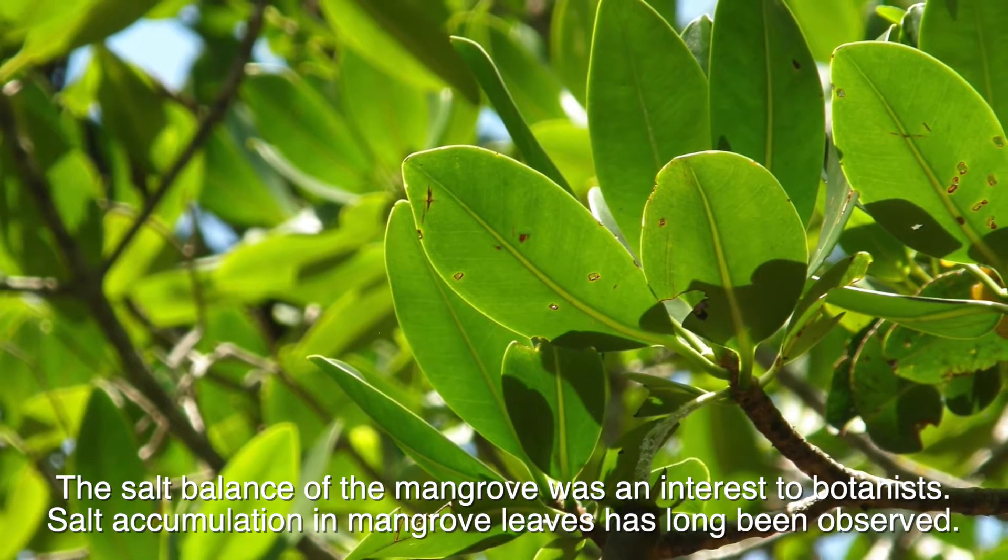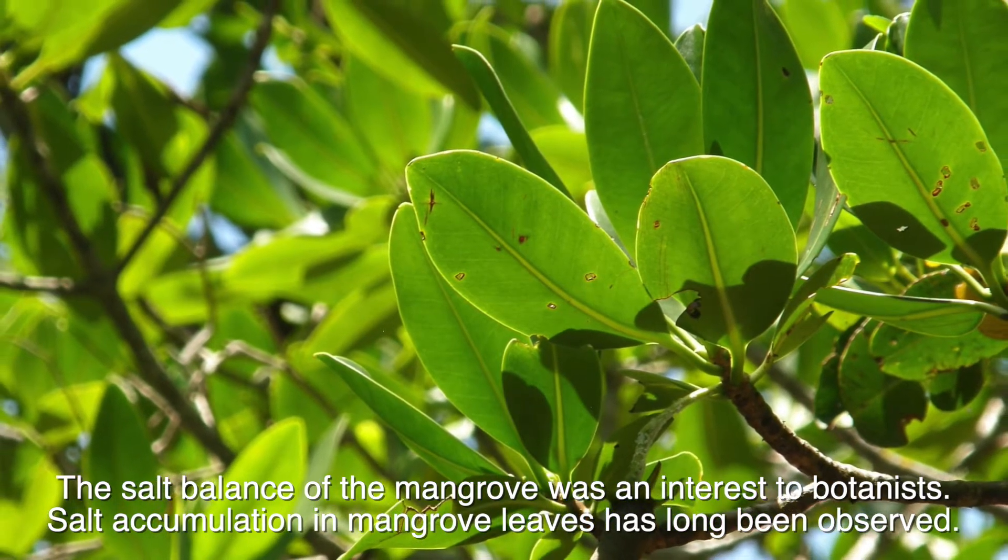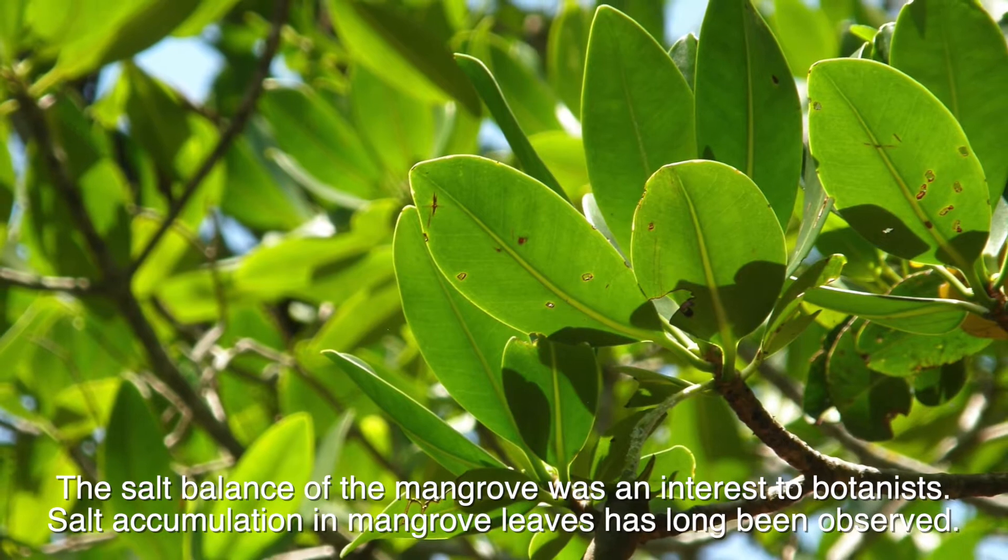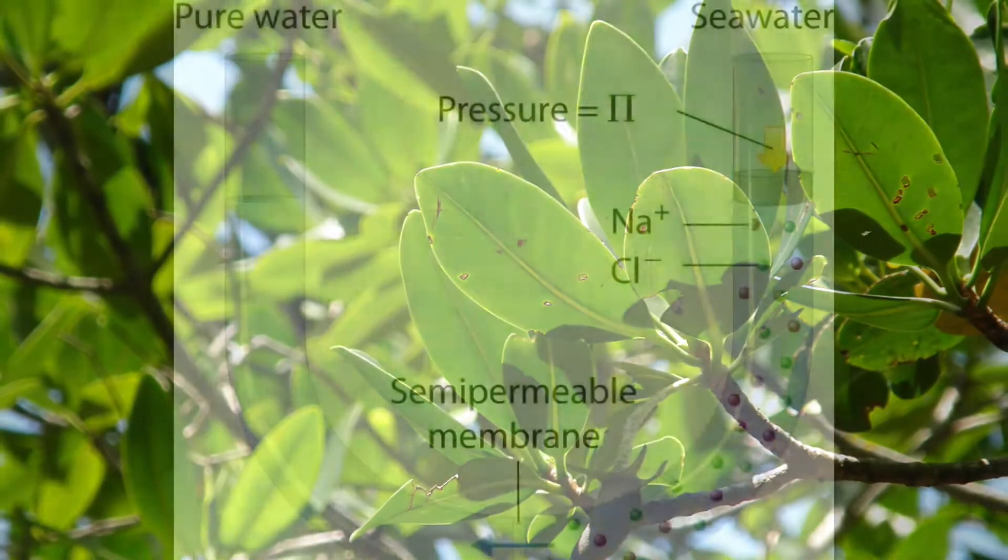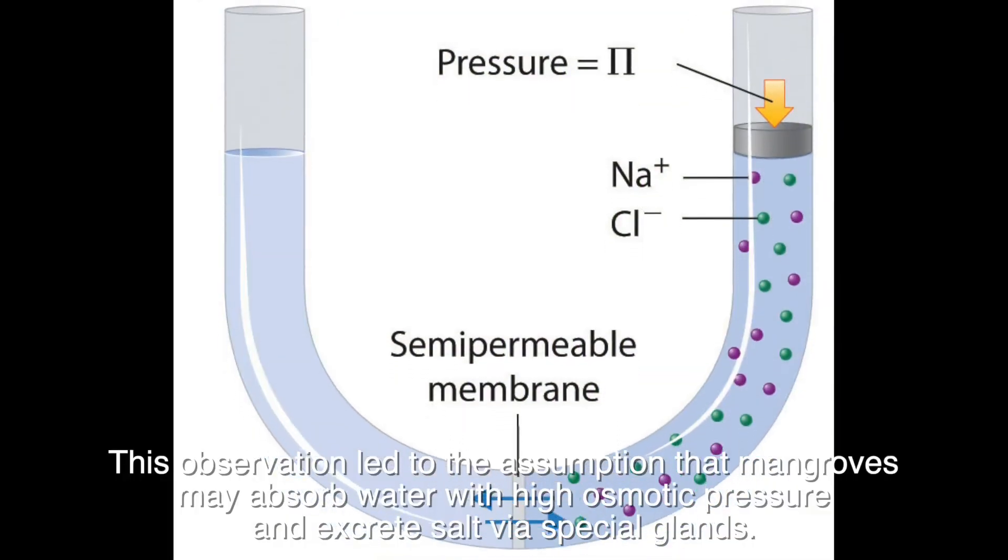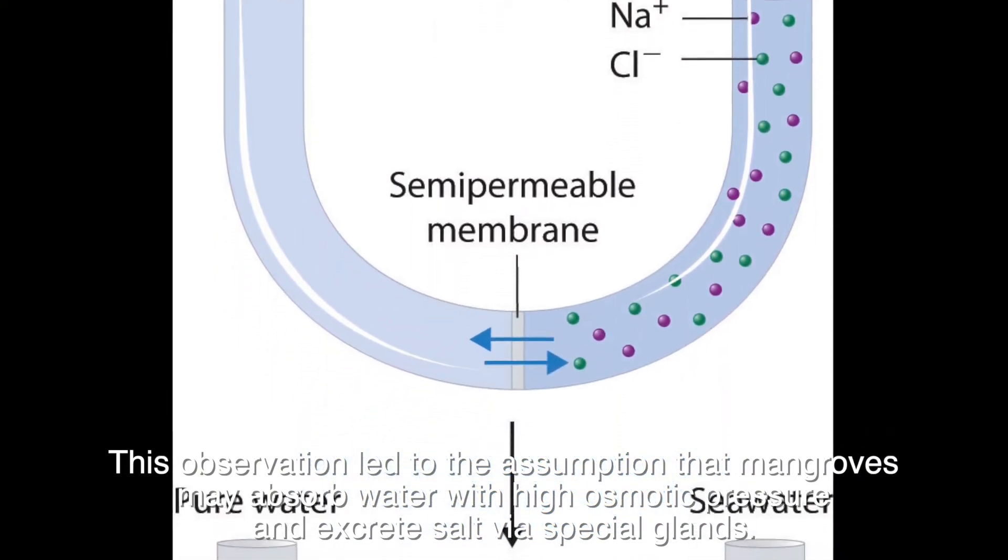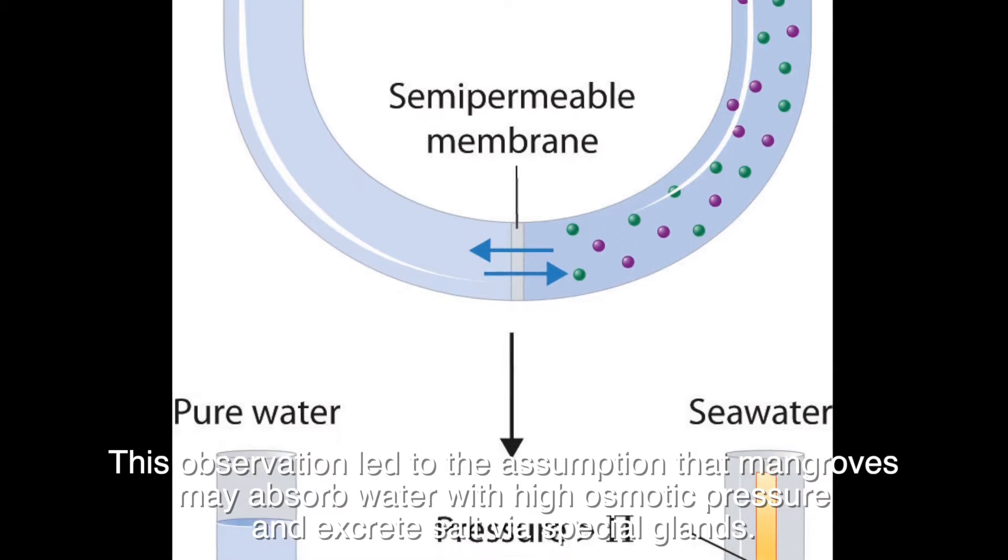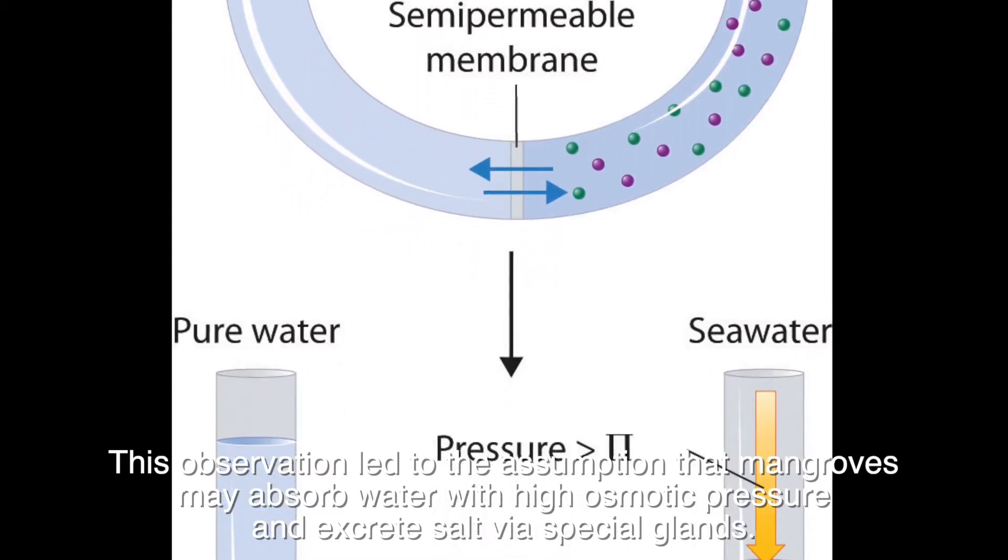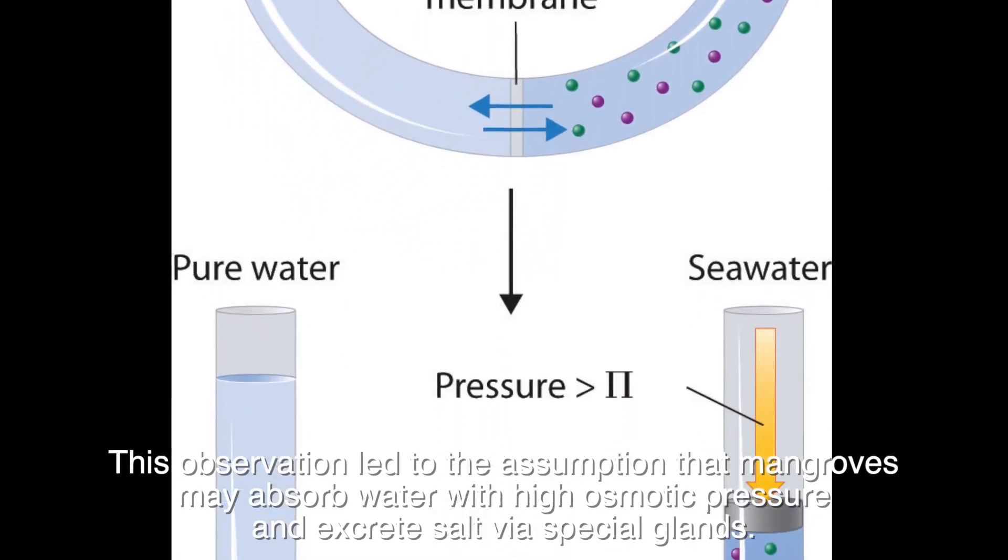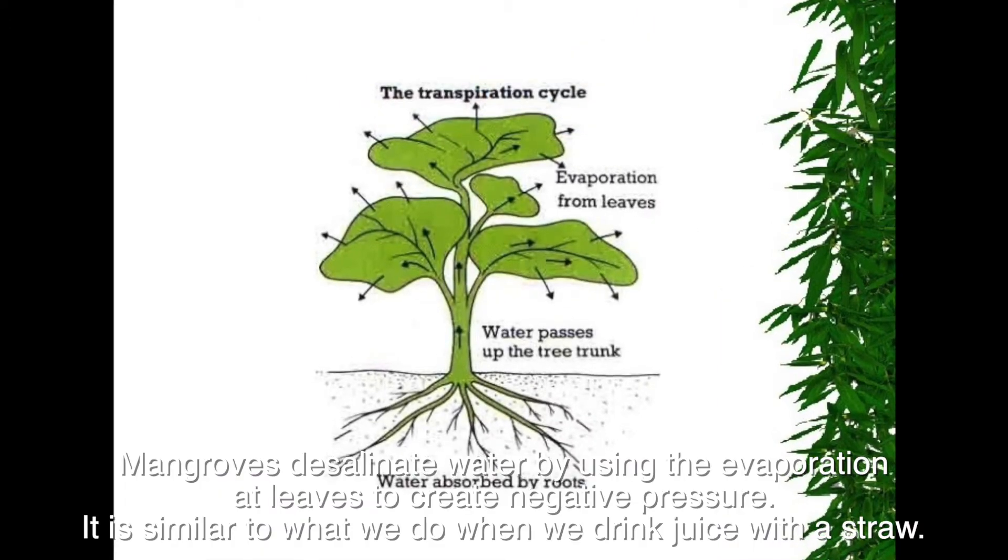The salt balance of the mangrove was of interest to botanists. Salt accumulation in mangrove leaves has long been observed. This observation led to the assumption that mangroves may absorb water with high osmotic pressure and excrete salt via special glands.